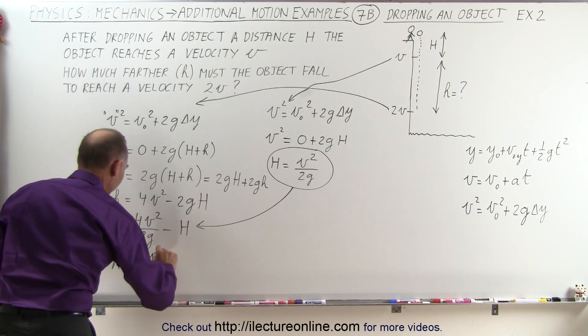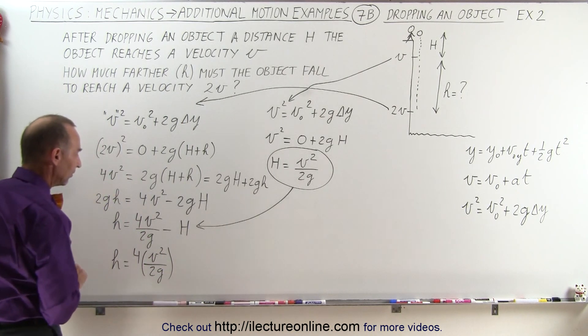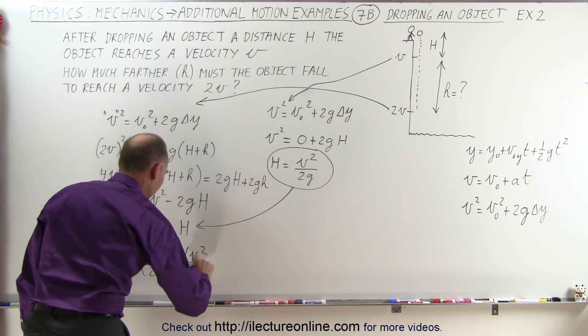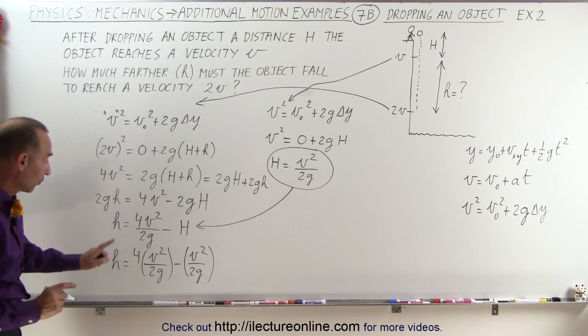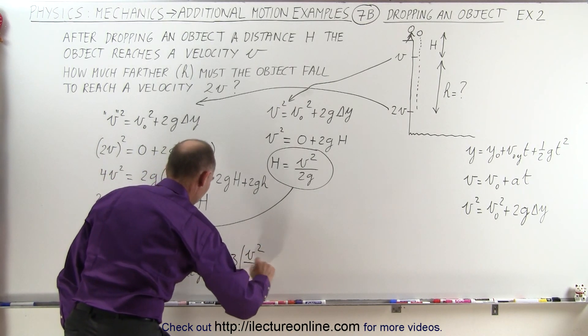So small h is equal to 4v² over 2g, and notice I'm going to write it like this, minus that quantity which is v² over 2g. And so therefore that is going to be equal to 3 times v² over 2g.